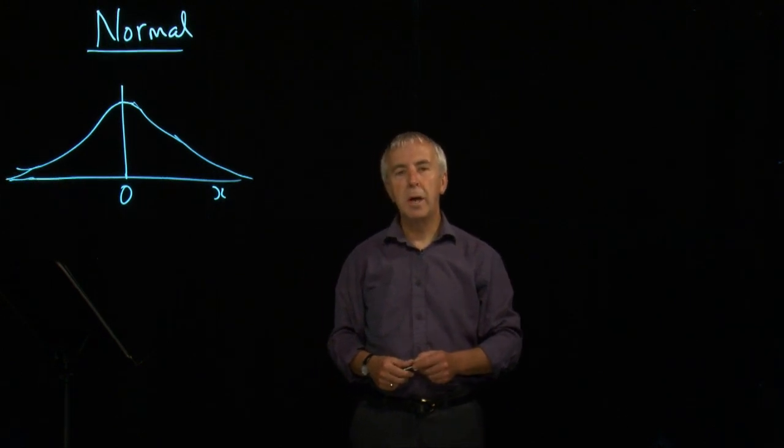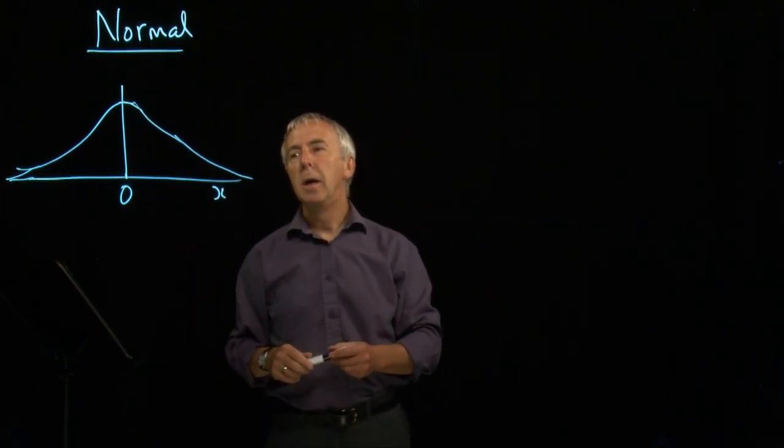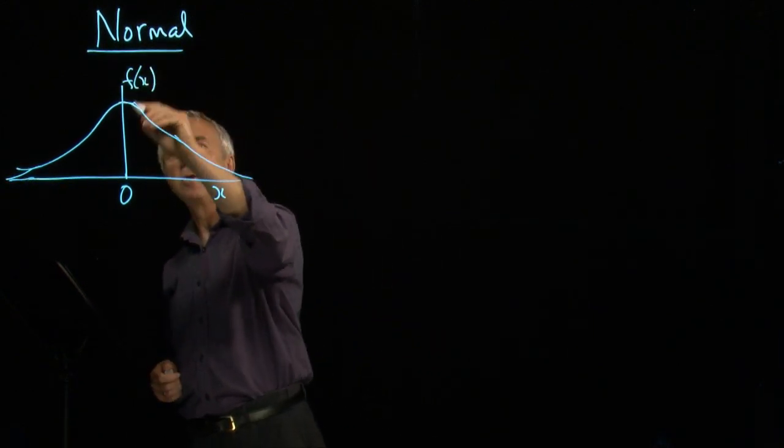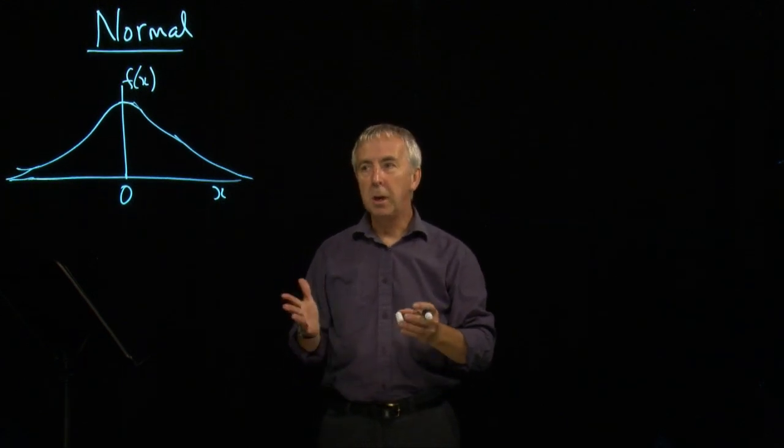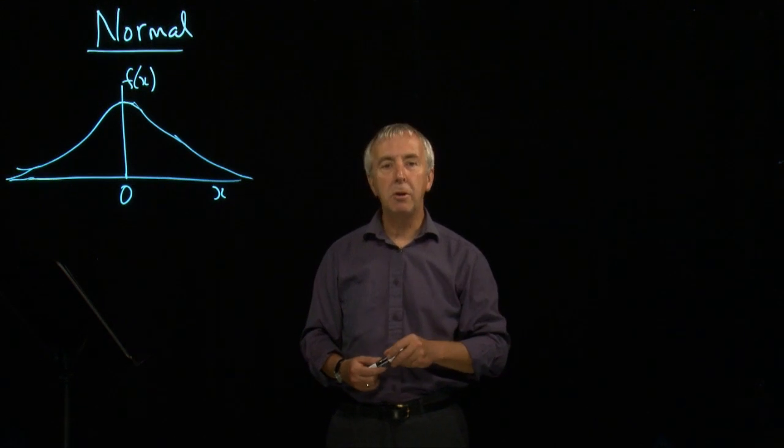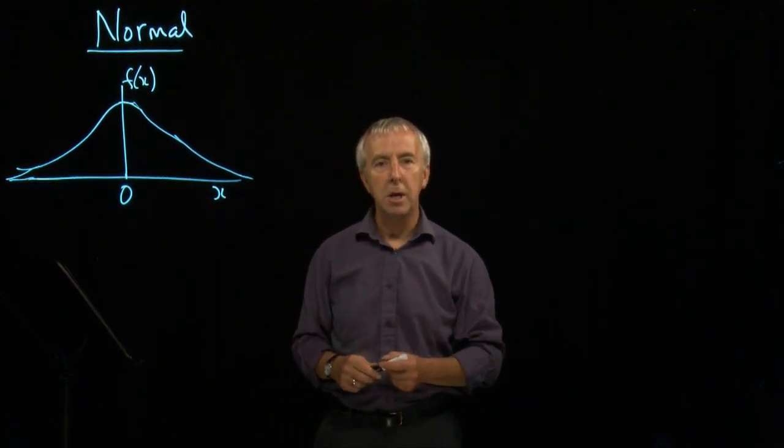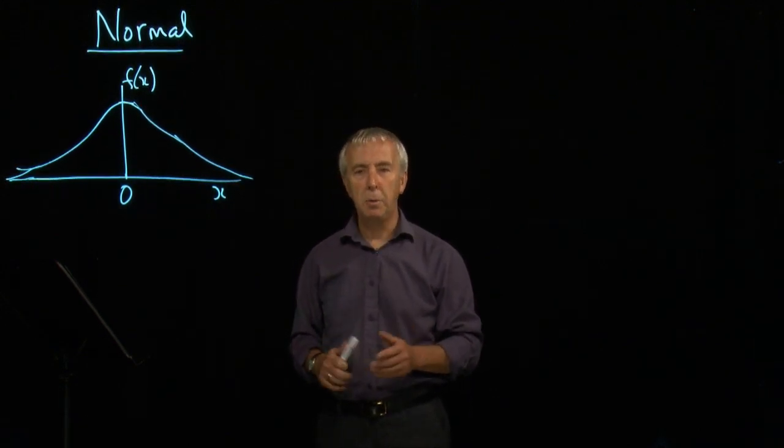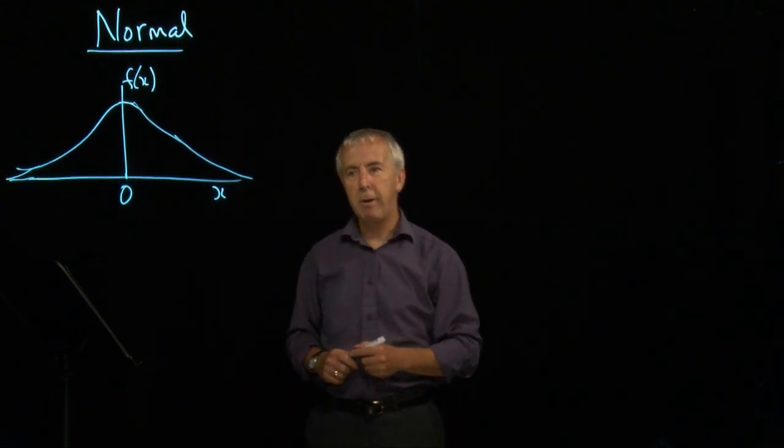So we need to be able to work out the probabilities by finding the areas. Unfortunately, the formula for the density function for f of x is actually very complicated but you don't need to know it. We've said before that you find areas by integrating but in fact this function is so complicated it cannot be exactly integrated. So books of tables have been produced which enable us to find out the area.